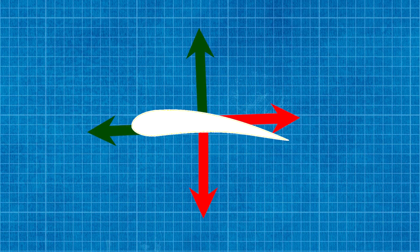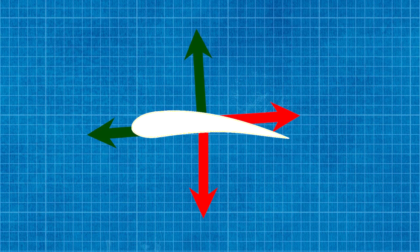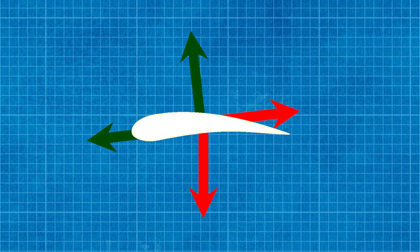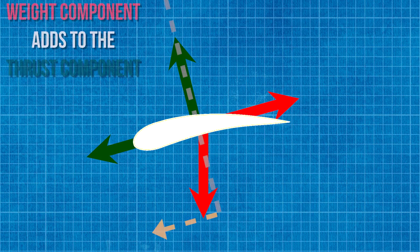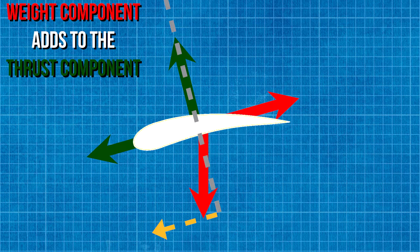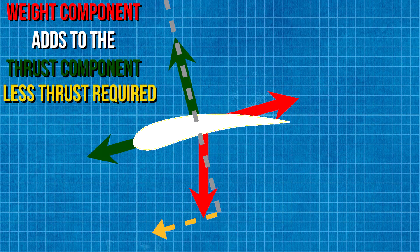Now let's look into glide descents. To start off, let's look at the aerofoil. Once again, lift is acting perpendicular to the wing and weight is vertically straight down. We can see that weight and thrust are now working together. Therefore, we need to reduce the amount of power. PAT will come into play once again.